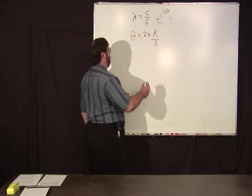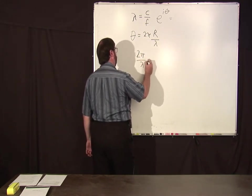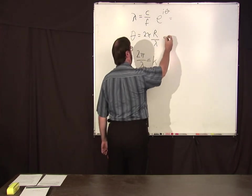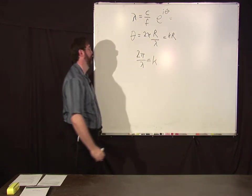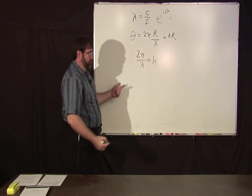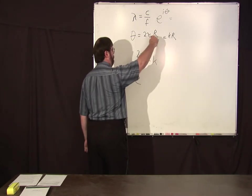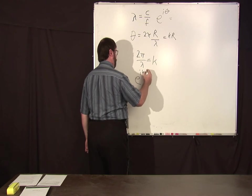So this two pi over lambda is a special symbol k, the wave vector. So this is equal to k r. Okay, so in general the phase of a wave going in a particular direction r is going to be e to the i k r.